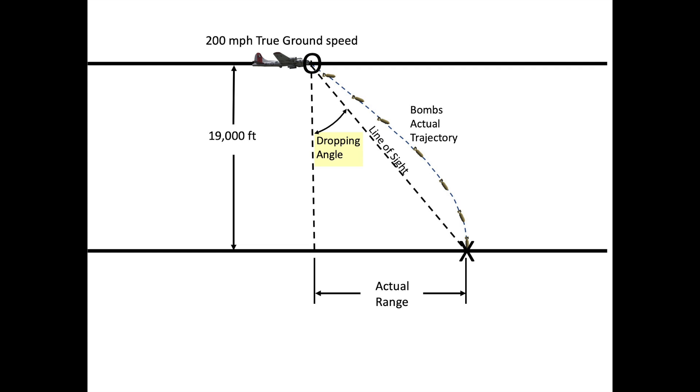The Norton bomb site will be plumbed with levels and gyroscopes stabilized such that the vertical line is always maintained while the plane is pitching, rolling, and yawing.